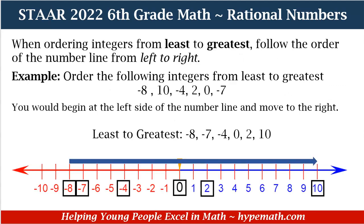On our number line, we see that the furthest number to the left is negative 8, and all we do is follow the arrow with the numbers. So our list from least to greatest would be: negative 8, negative 7, negative 4, 0, 2, and then 10. That is our list of numbers from least to greatest.